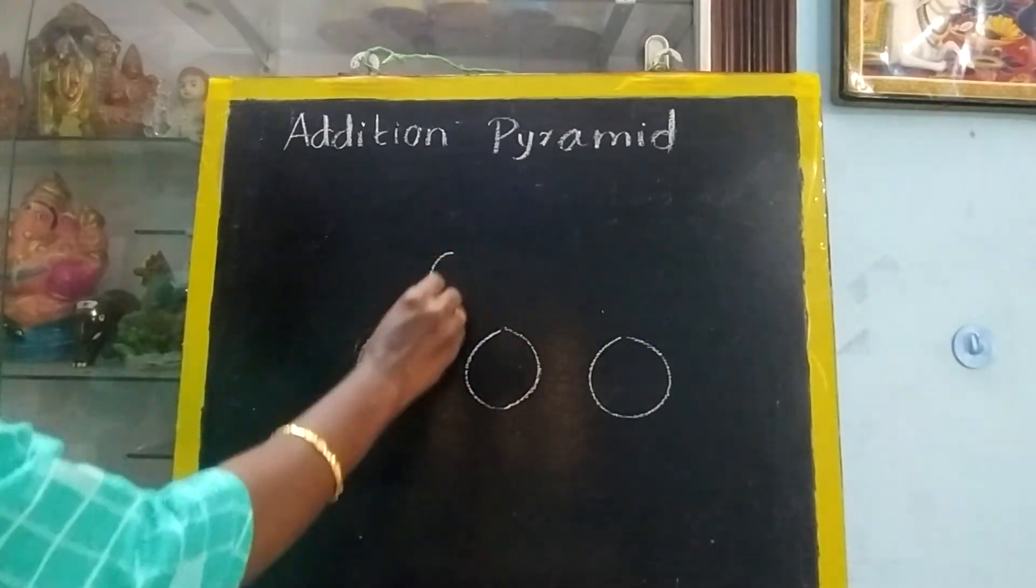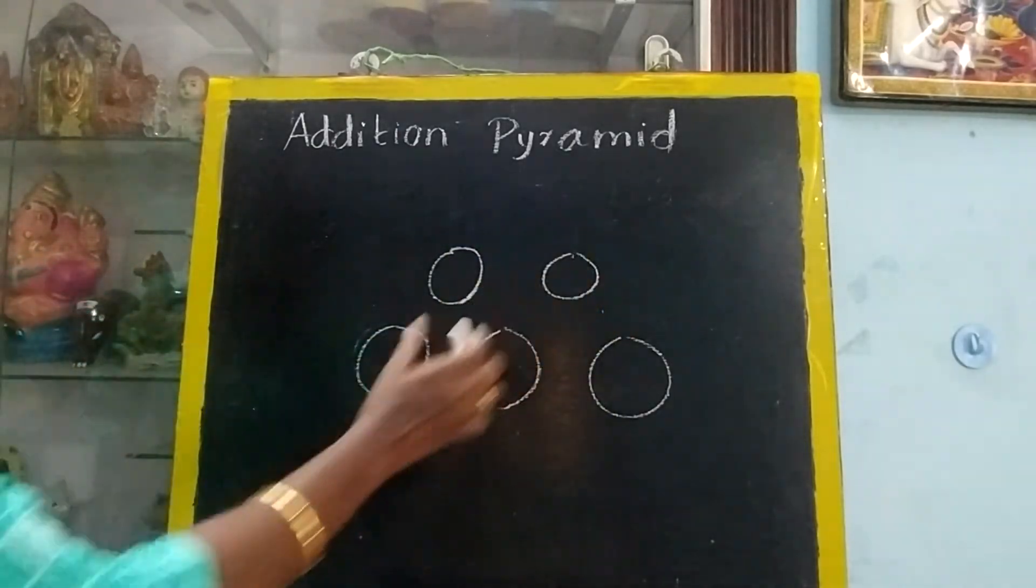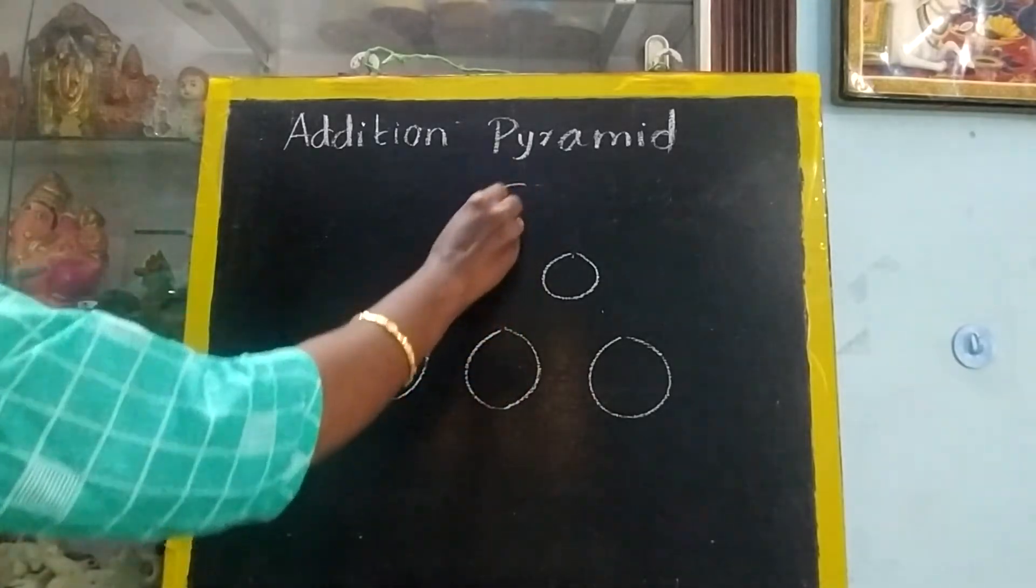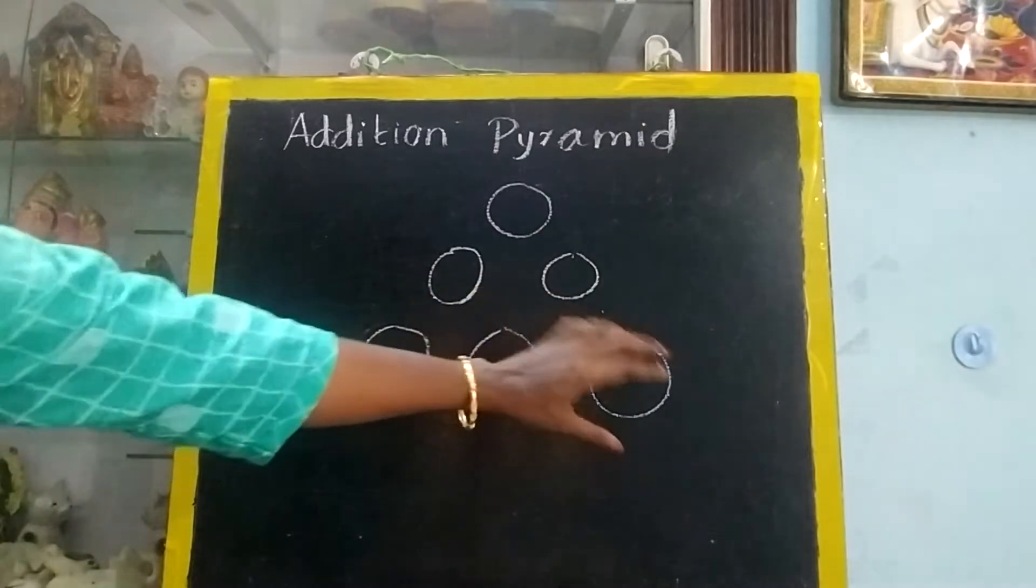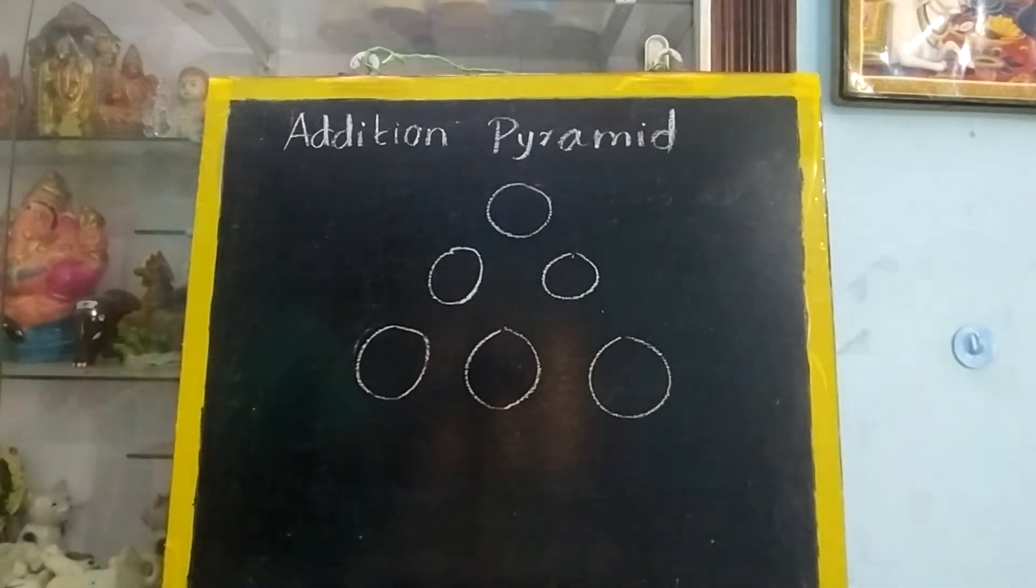Then draw two circles. This circle should be in between these two. Then draw one circle at the top. So that number will be given only for the base. Only for the down circles number will be given.